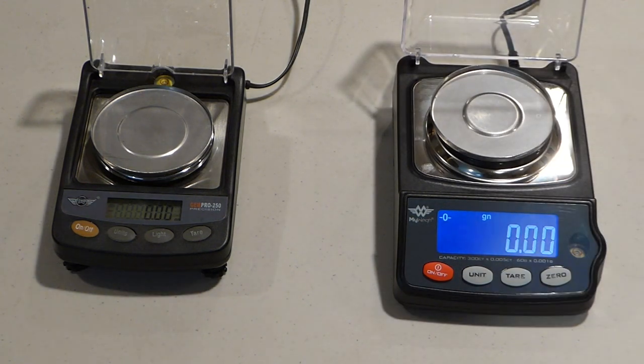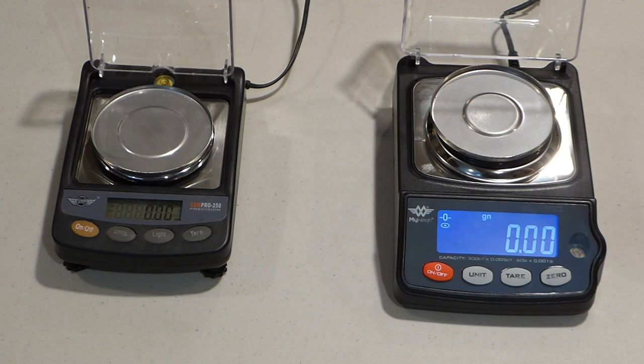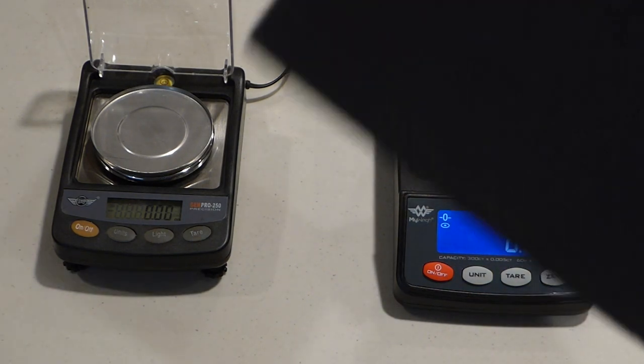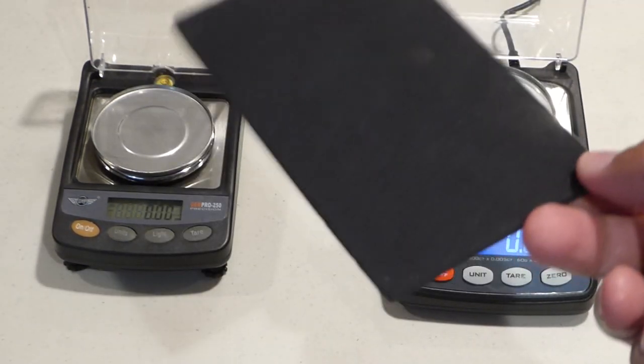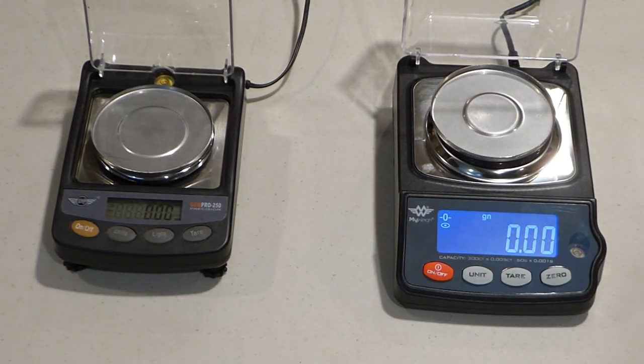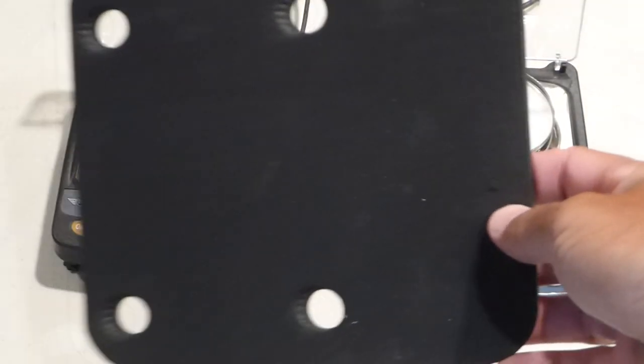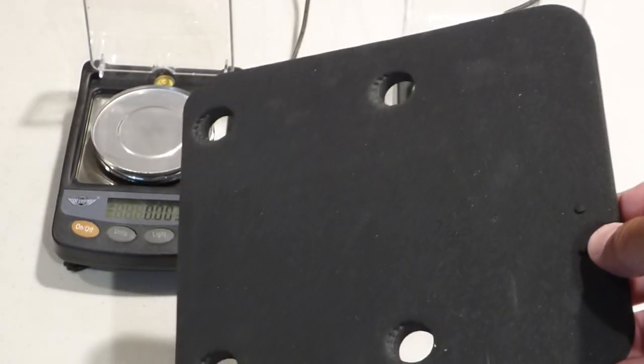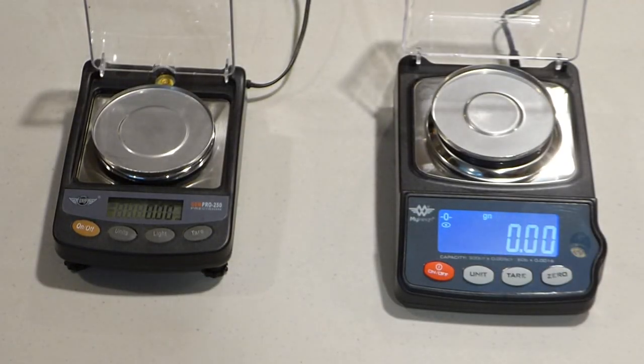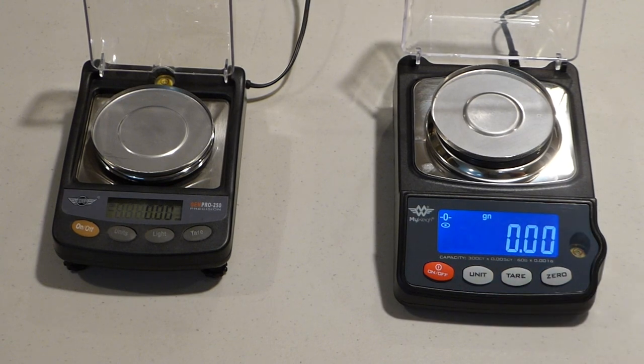You also want to have your scale on a surface that's not going to be prone to vibrations. If it is, you can use a mouse pad or any kind of rubber foam that's going to absorb some of the vibration. The GEMPRO 300 does come with this in its case, and this actually can be used as a vibration pad. The 250 does not come with anything, so you would need to buy one on your own.